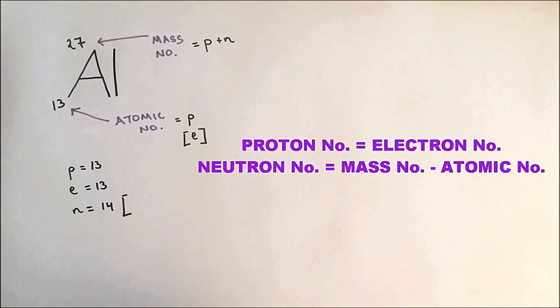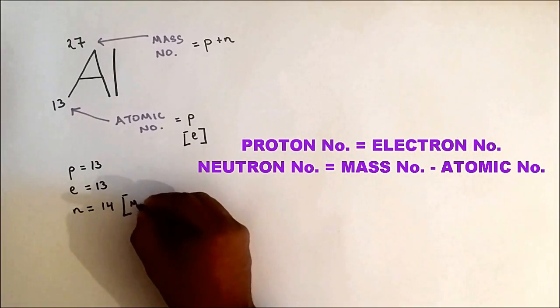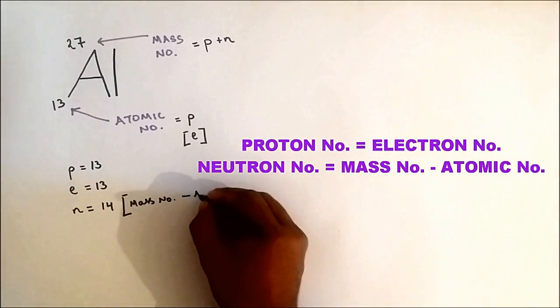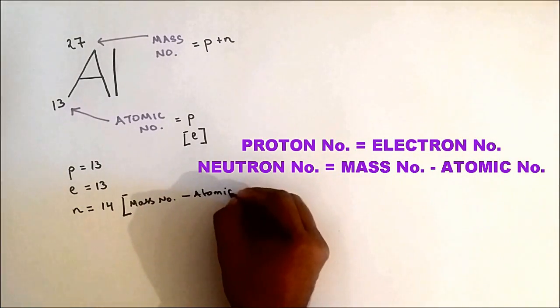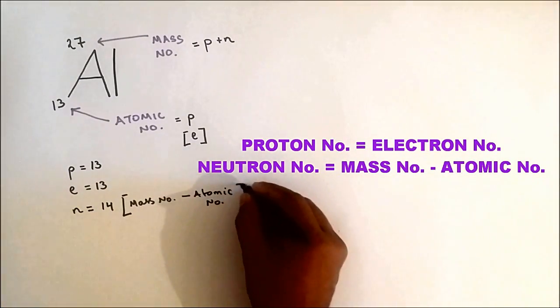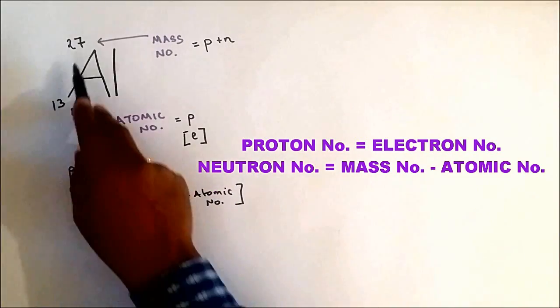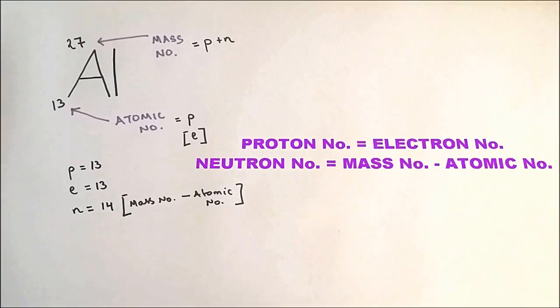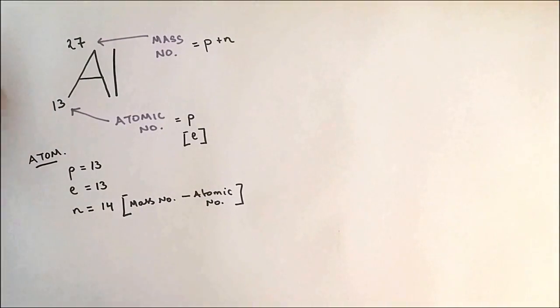The way to find the number of neutrons is by doing mass number take away atomic number. So 27 take away 13 will give us 14. So this is how it works for an atom. Now what about ions?